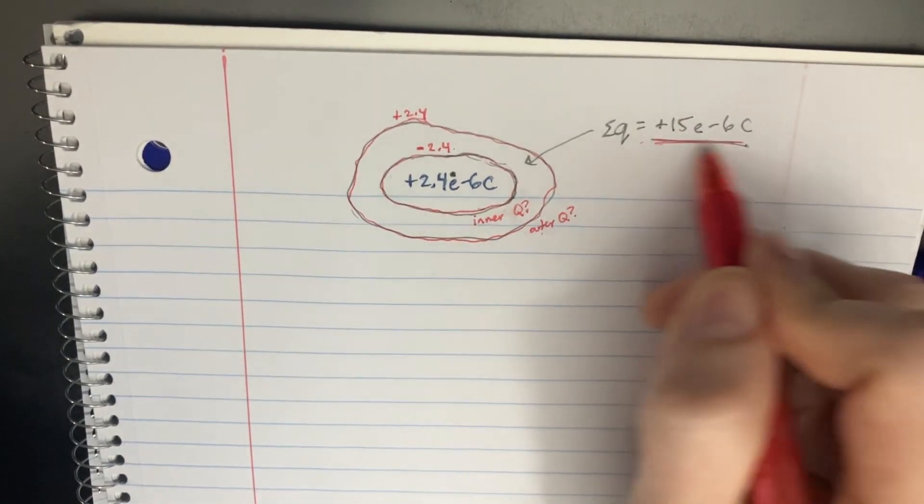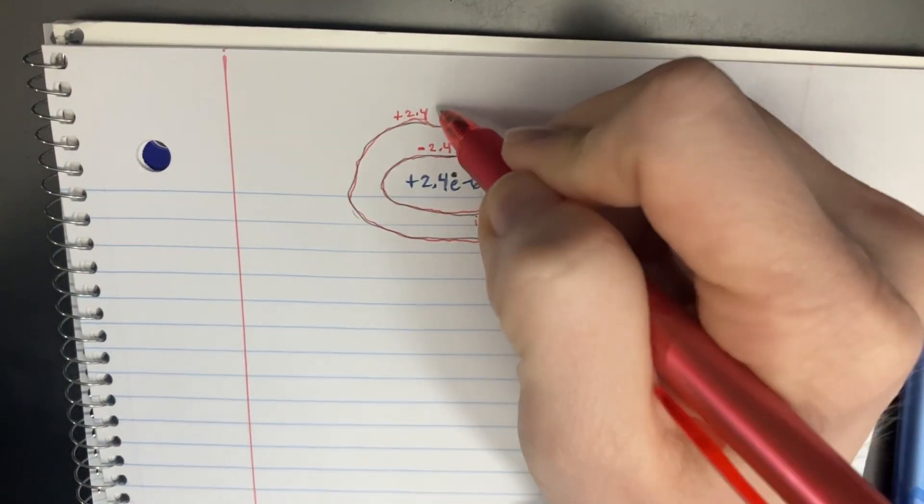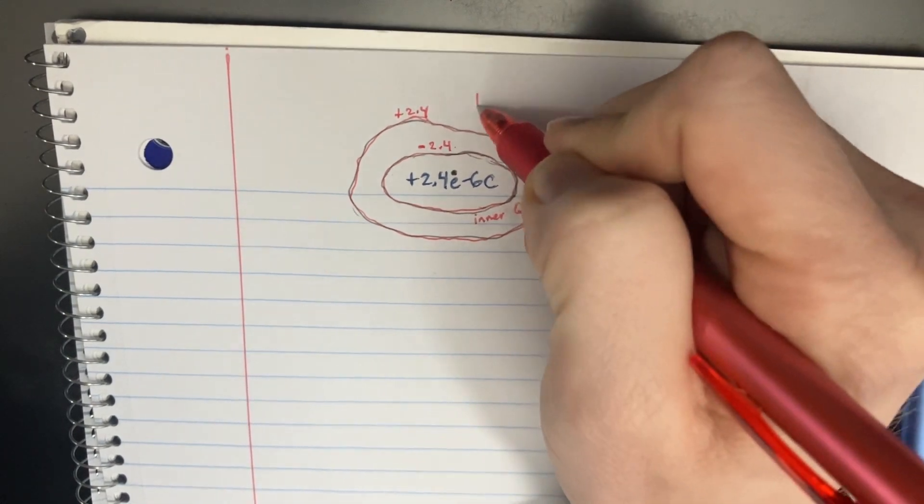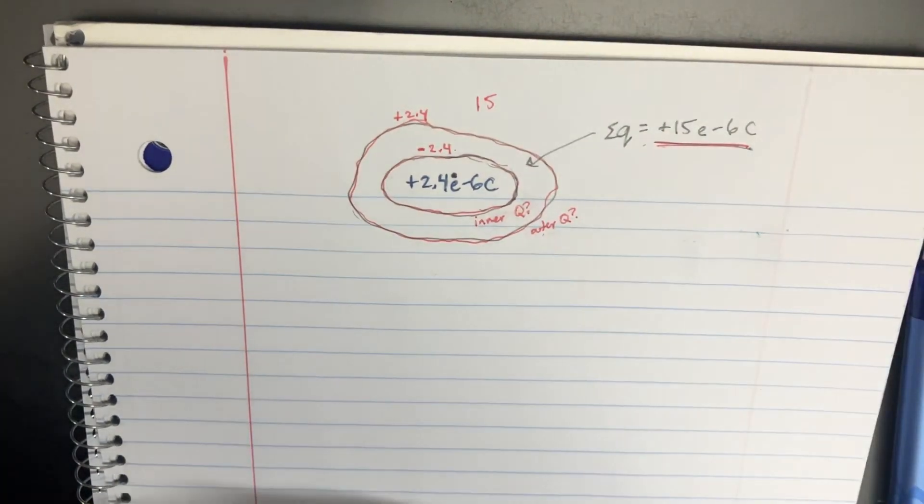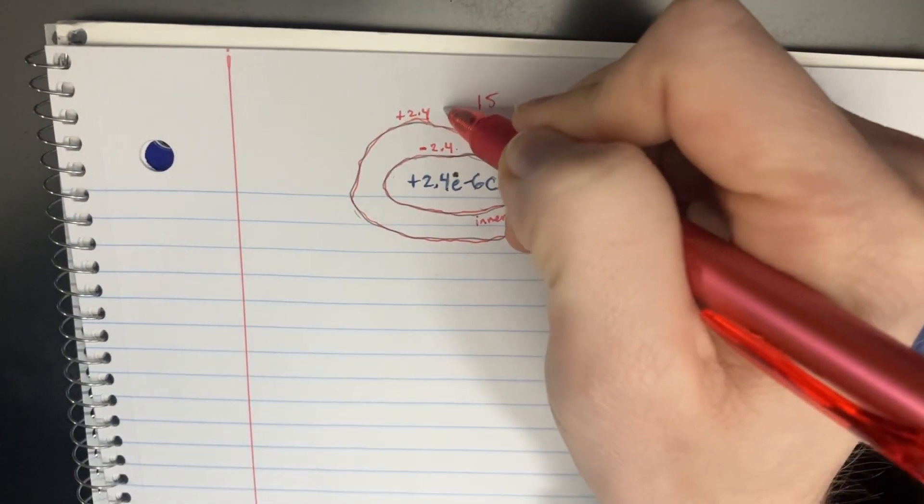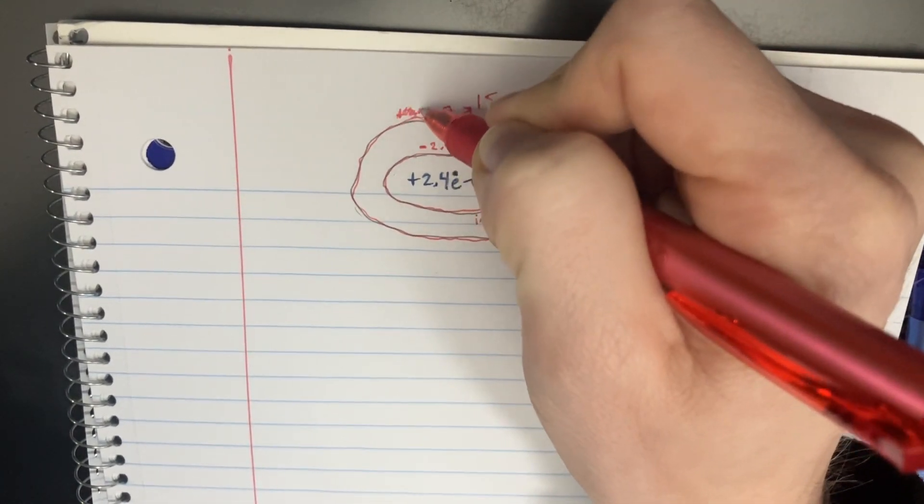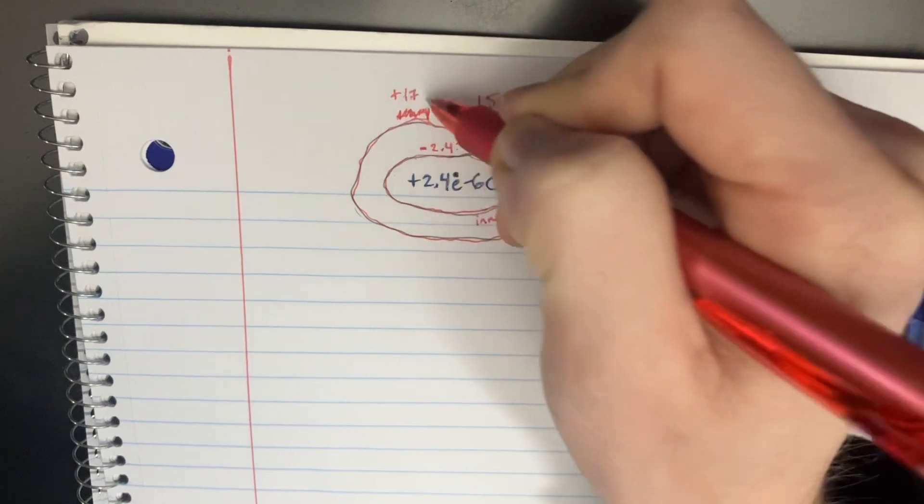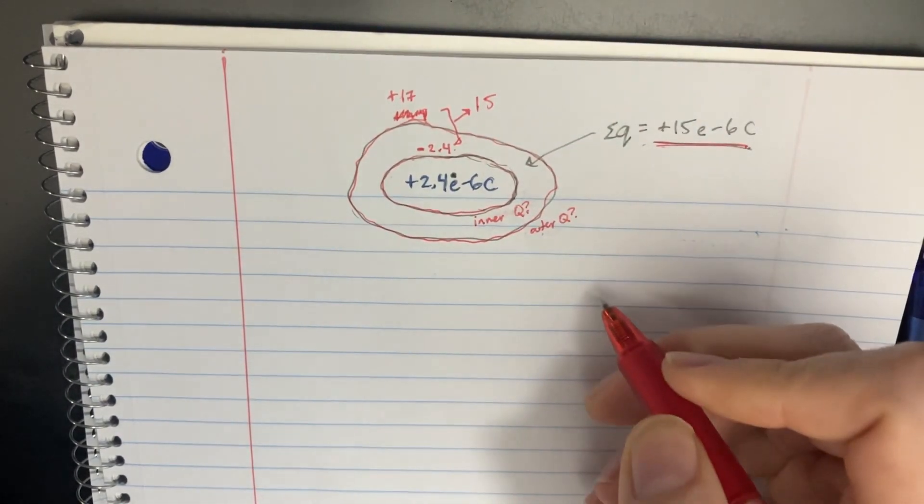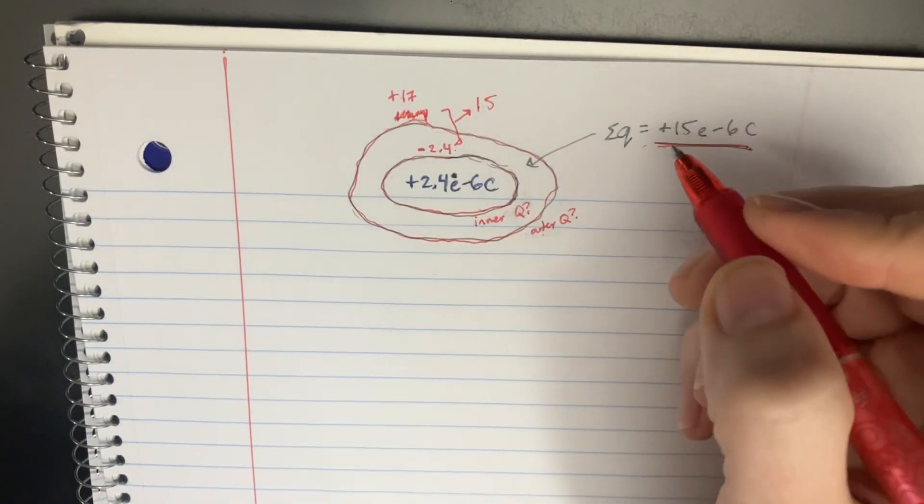But it turns out that the conductor isn't neutral. It's 15. So instead of that, this is supposed to be a net 15. How do you get a net 15 from that? Doesn't this have to be like positive 17 in order for that to be 15? So that's kind of what we have to figure out.